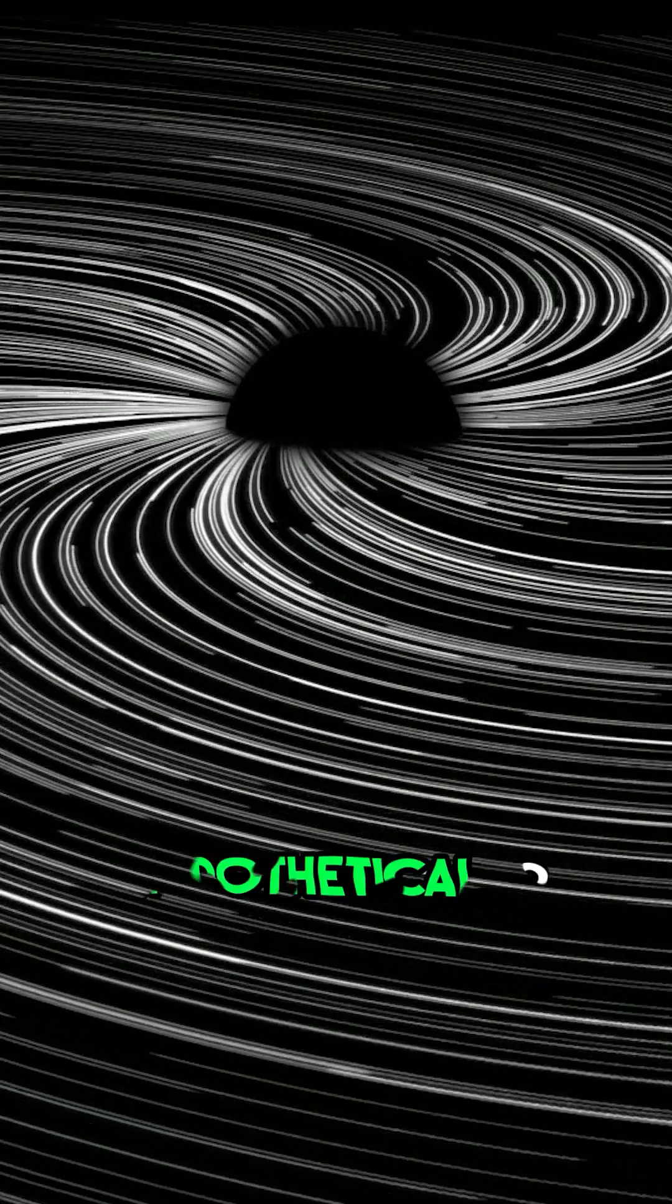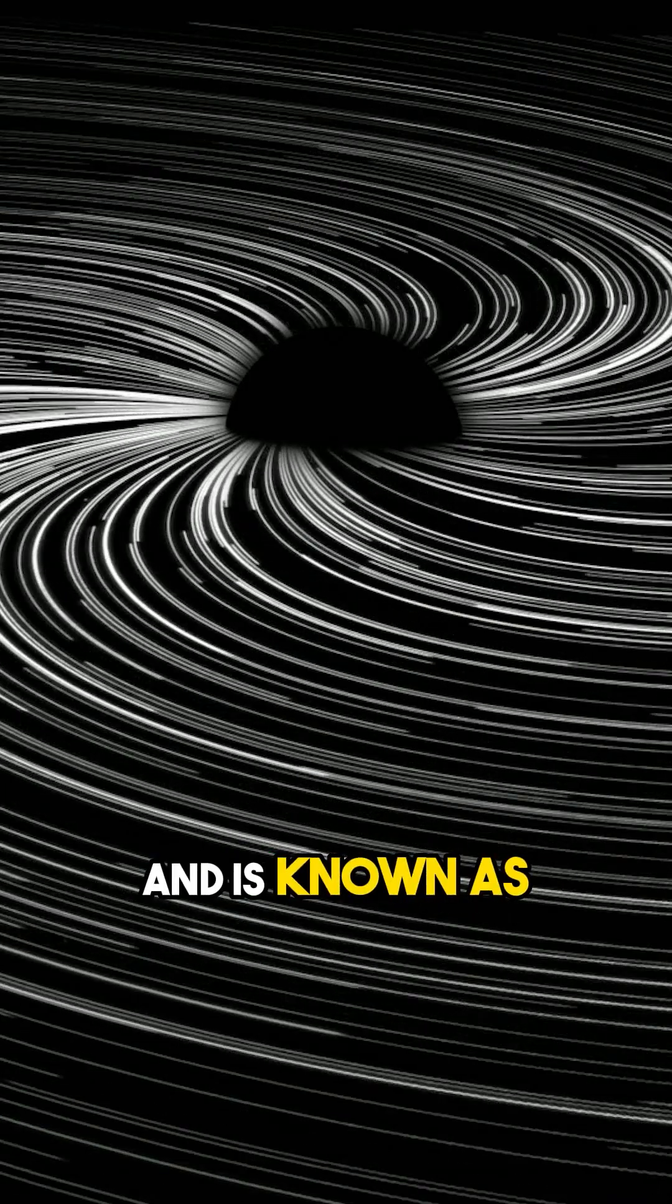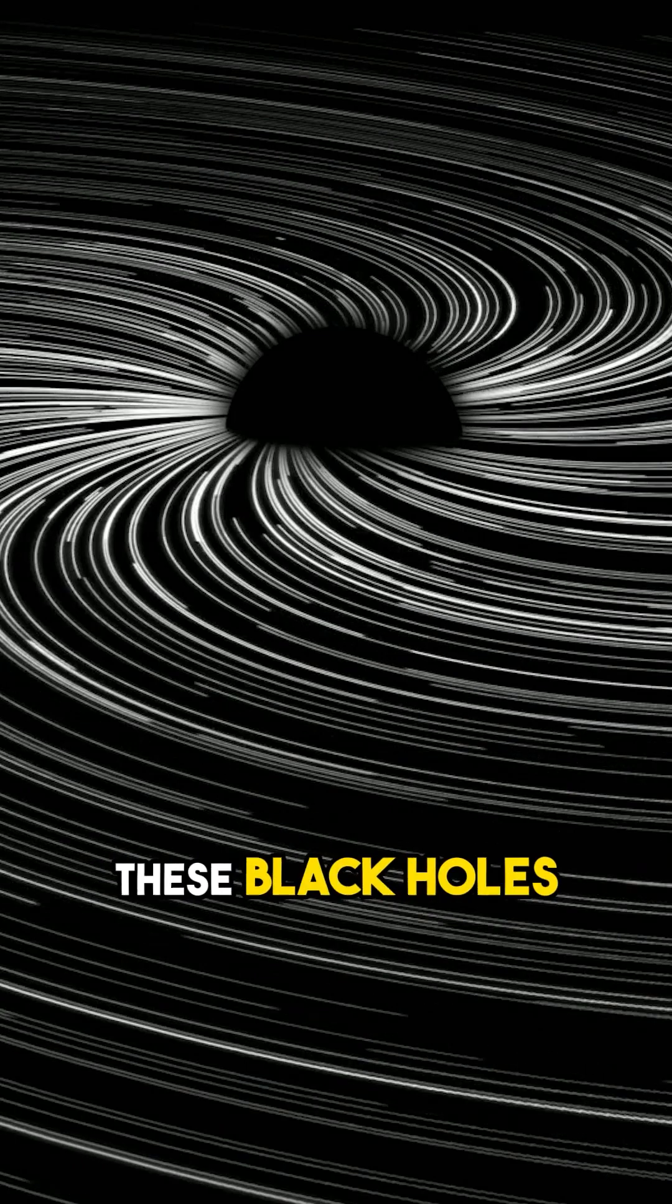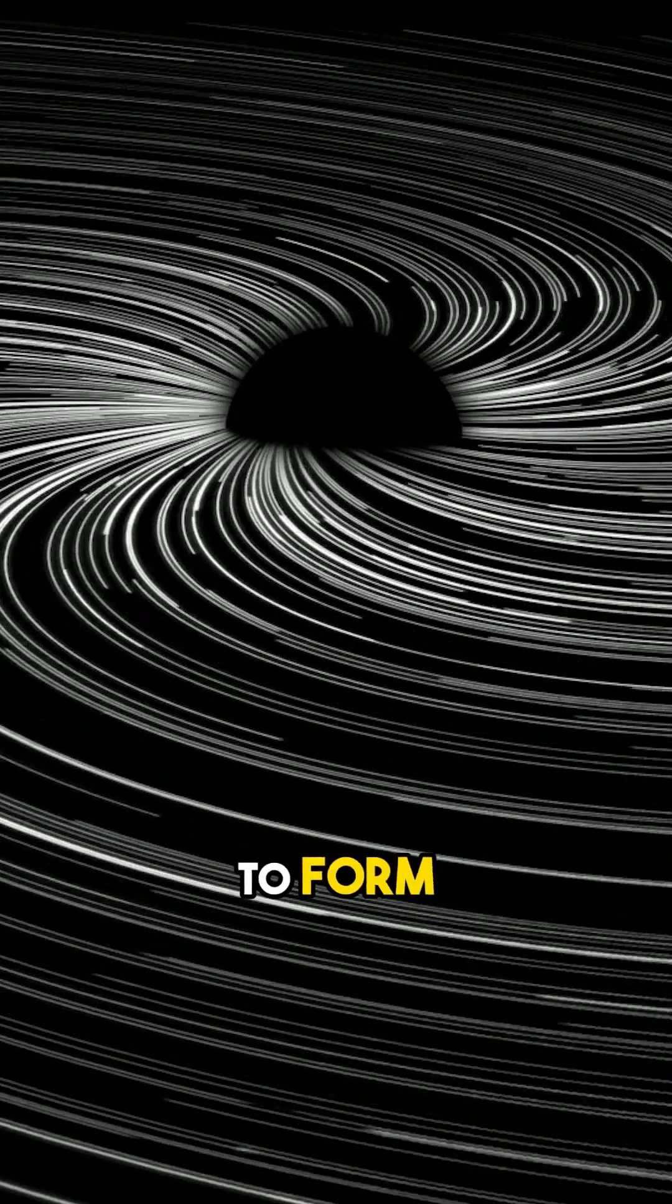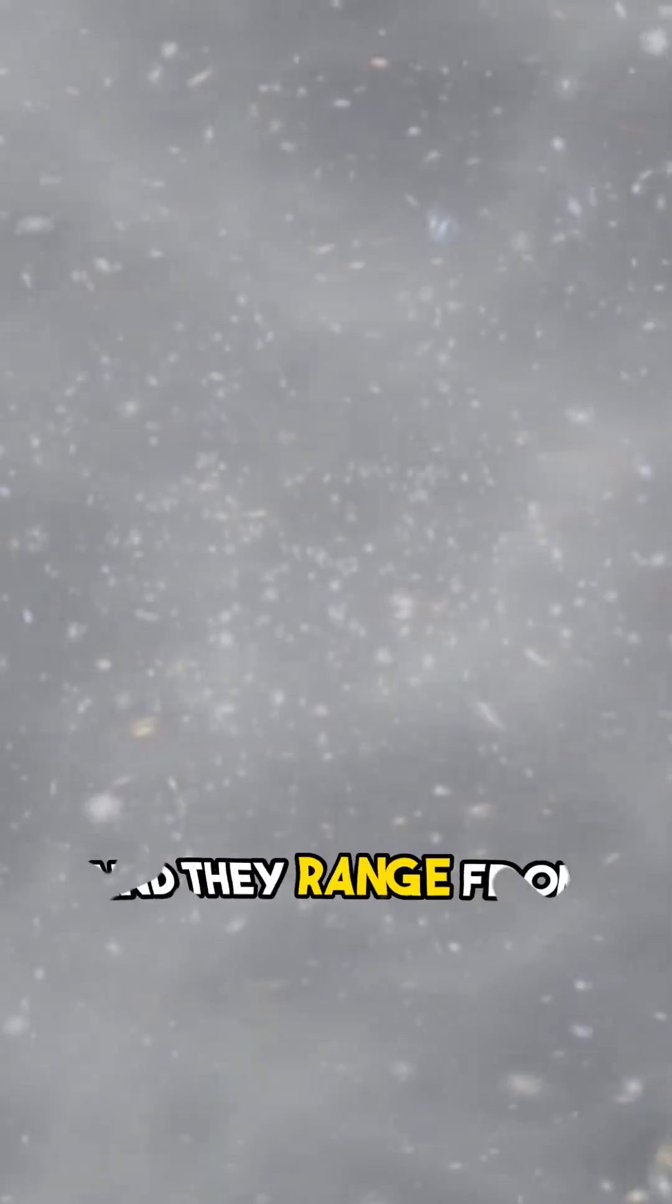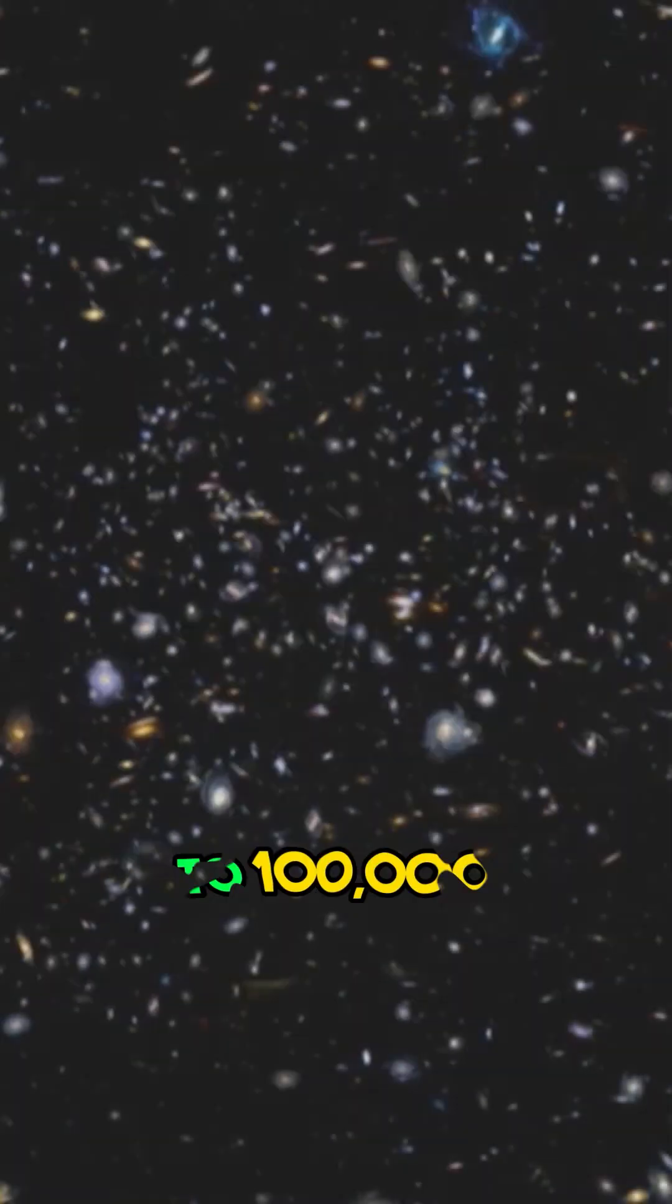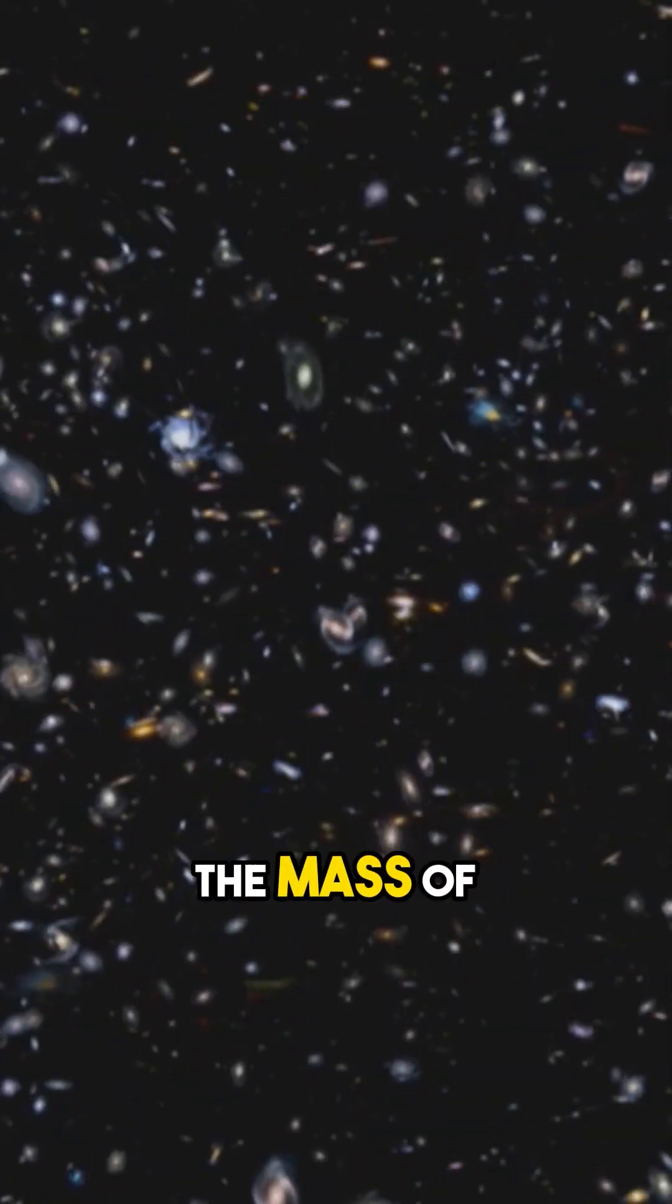The fourth type of black hole is hypothetical and is known as primordial black hole. These black holes are believed to form just one second after the Big Bang and they range from less than a gram to 100,000 times the mass of the sun.